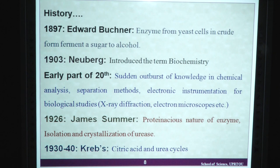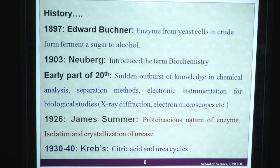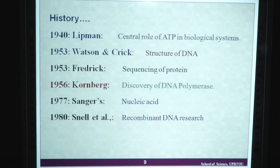In the early part of the twentieth century, there was a sudden outburst of knowledge in chemical analysis, separation methods, and electronic instrumentation for biological studies such as X-ray diffraction, electron microscopy — including TEM (transmission electron microscope), SEM (scanning electron microscope) and AFM (atomic force microscope). In 1926, James Sumner demonstrated the proteinaceous nature of enzymes through isolation and crystallization of urease. In 1930–40, Krebs proposed the citric acid cycle and urea cycle. In 1940, Lipmann described the central role of ATP in biological systems. In 1953, Watson and Crick proposed the structure of DNA. Also in 1953, Frederick Sanger proposed sequencing of proteins.